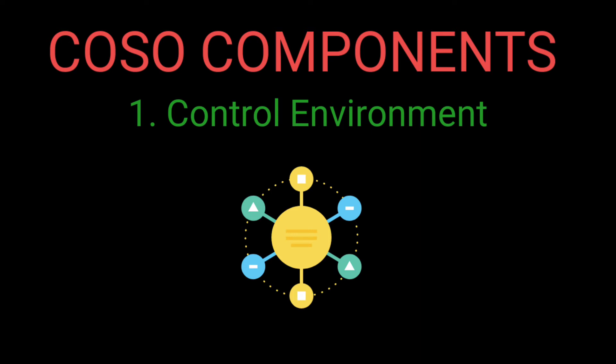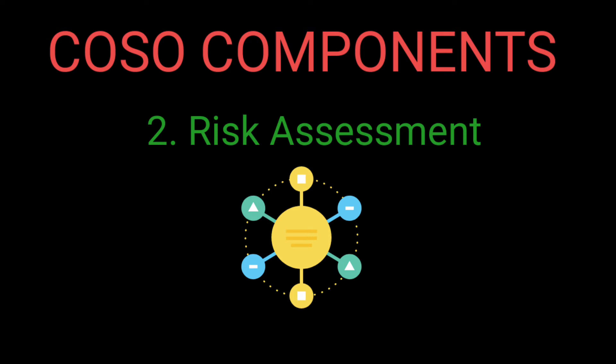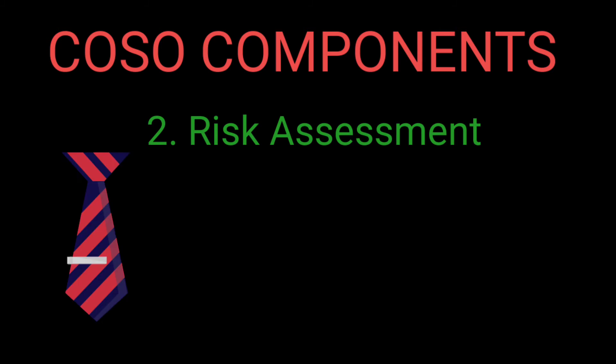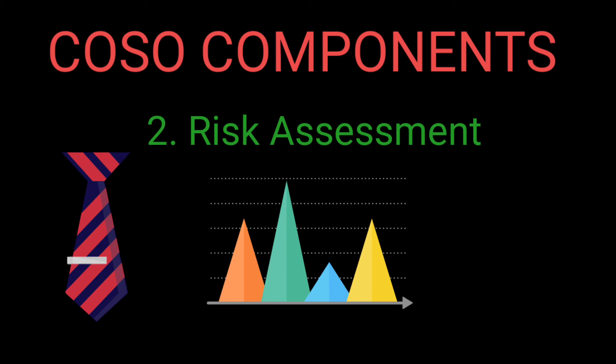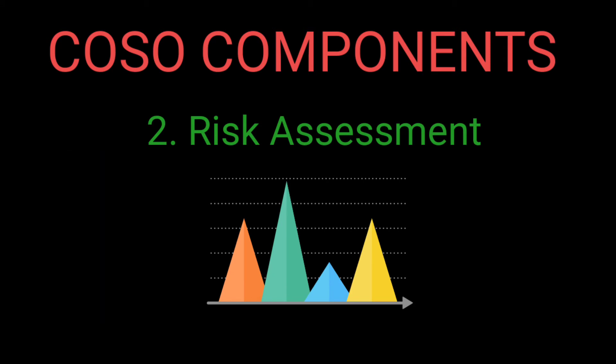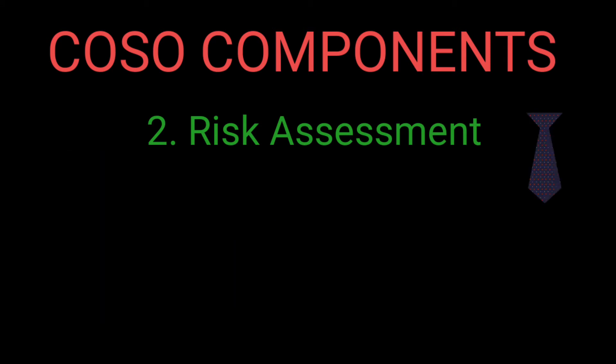The next component is Risk Assessment, which forms the basis for how risk is managed in both internal and external environments. Its components include specific, appropriate objectives that help identify and analyze risk and evaluate fraudulent risk in an organization. It also helps identify and analyze changes that could significantly affect internal controls.